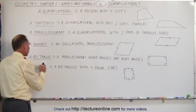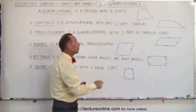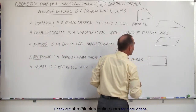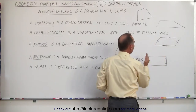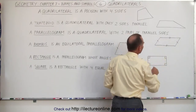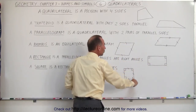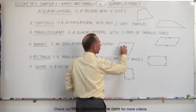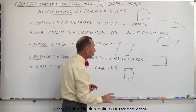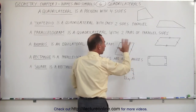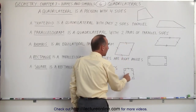Finally, the most restrictive quadrilateral is called a square. It is a rectangle, meaning all four angles must be right angles or 90 degrees, and the top and bottom side must be parallel, as must the left and right side. But additionally, all the sides must be equal in length, just like a rhombus. So a square must have all four sides the same and all four angles the same. The difference between a square and a rhombus is that in a rhombus the angles are not right angles, whereas in a square they are.